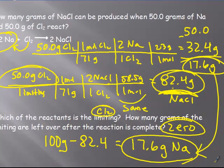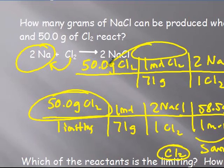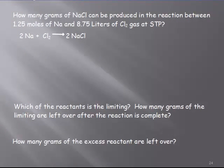That's the kind of calculation you would have to do if you have a single or double replacement when you have another product — you can't simply add them up and subtract. Now a much more challenging one: same reaction, but instead of starting with grams, you have 1.25 moles of Na and 8.75 liters of Cl2 at STP. You don't have grams, but you still want to know how many grams of NaCl are produced.